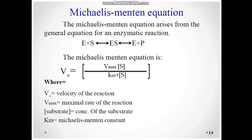Next we have the Michaelis-Menten equation, which arises from the general equation for an enzymatic reaction. The enzyme binds with the substrate to form an enzyme-substrate complex, which ultimately produces the enzyme and product, releasing the product. Both steps are reversible.